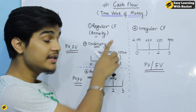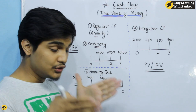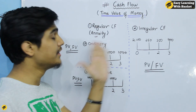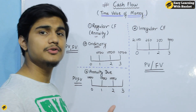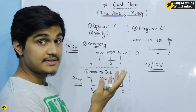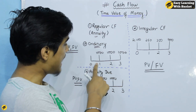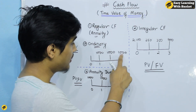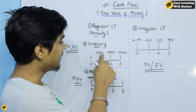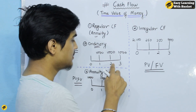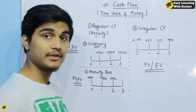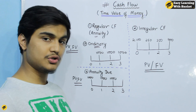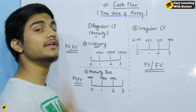Ordinary annuity — the payment happens at the end of each period. For example, like rent paid at the end of the month: you pay in month two for month one, you pay in month three for month two. That is the ordinary annuity.